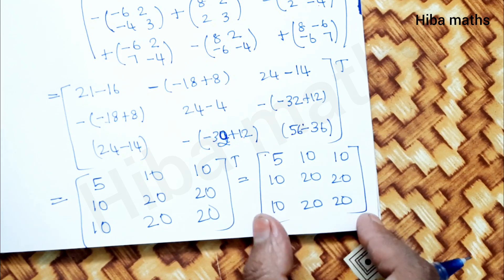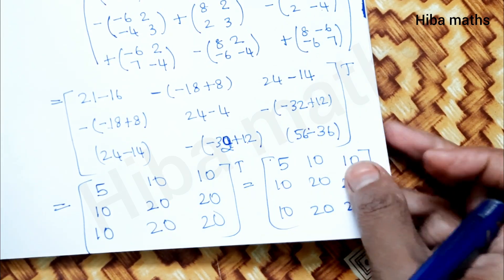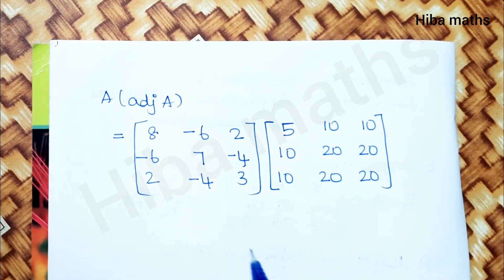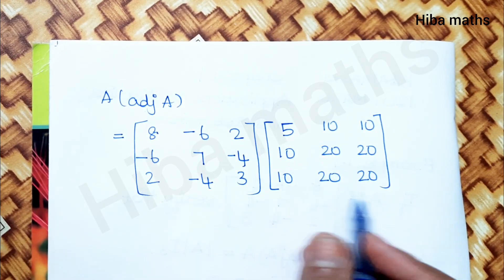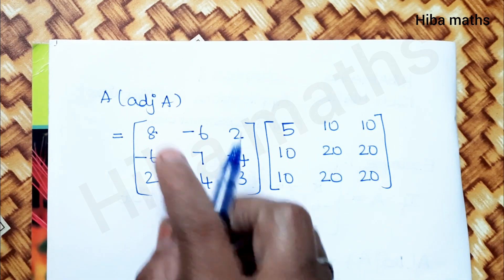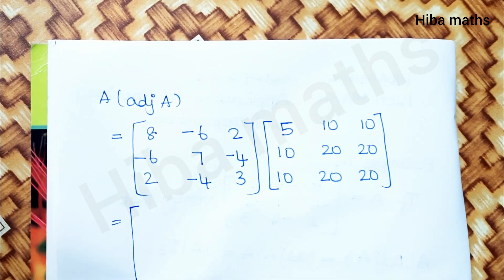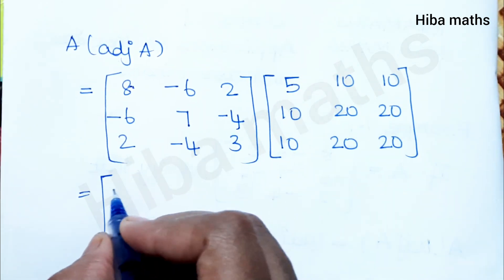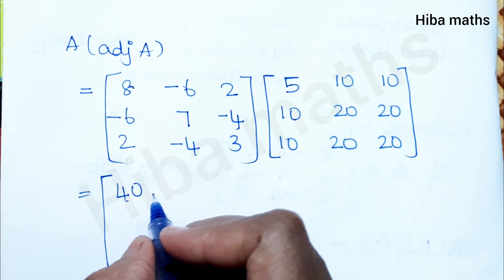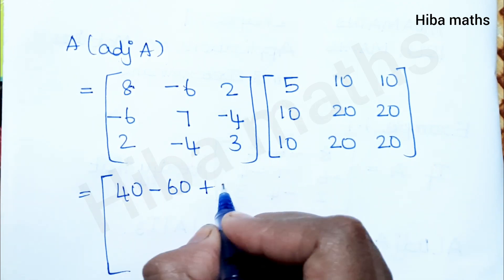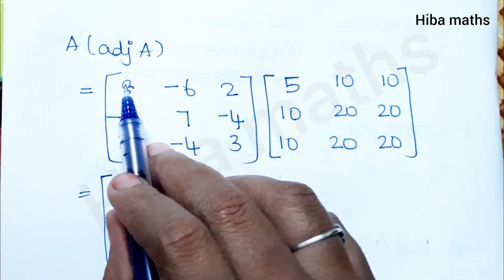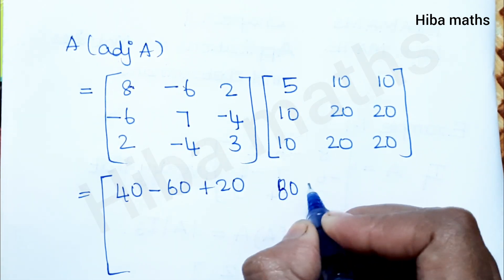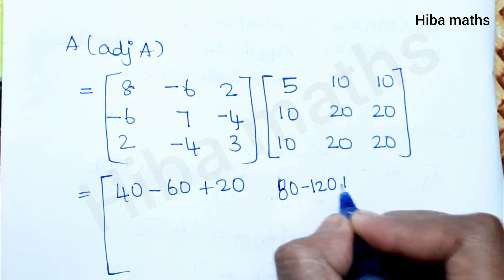Now we substitute and solve: computing A into adjoint of A by matrix multiplication. First row, first column: 8×5 + (−6)×10 + 2×10 = 40 − 60 + 20 = 0. First row, second column: 8×10 + (−6)×20 + 2×20 = 80 − 120 + 40 = 0. First row, third column also gives 0.